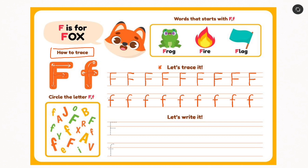Now you know how to trace the alphabet F. Let's look at how to write the capital F as the first example. We move from top to bottom, left to right, left to right. Making sure that from top to bottom is the vertical stroke, the first left to right is on the first guideline, and the second left to right is just slightly under the second guideline.